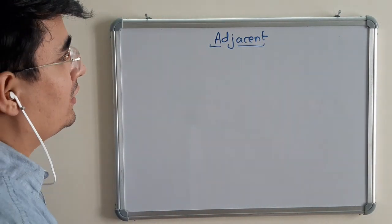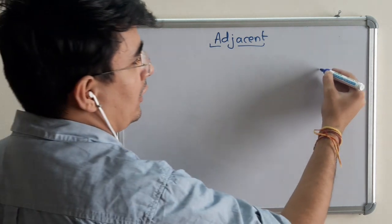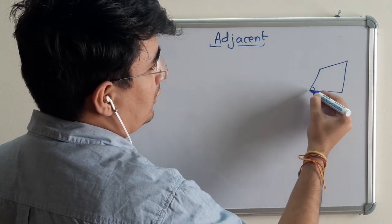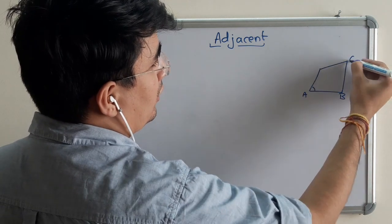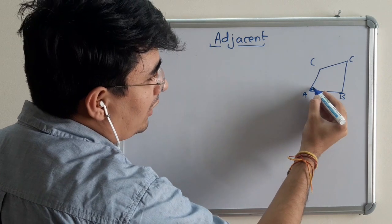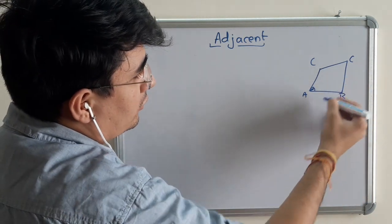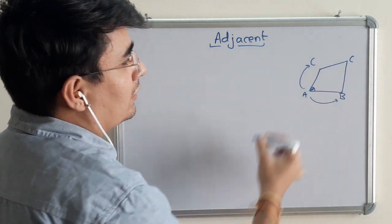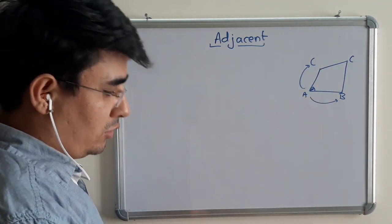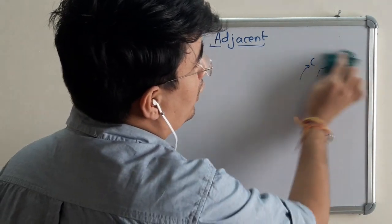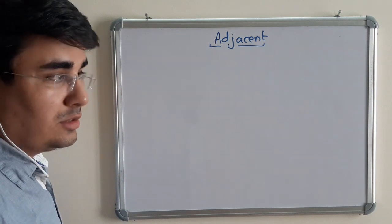When we talk about adjacent in terms of quadrilaterals, if I talk about this angle, suppose angle A, adjacent means just next to it. So angle adjacent to A is angle B or angle C. There are different definitions for this. Right now, in today's class, we are going to discuss adjacent angles.